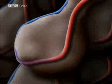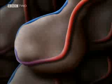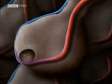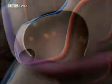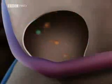Each alveolus is surrounded by a network of minute blood vessels. Those individual blood vessels are very much less than a hair's breadth in diameter. As blood seeps and permeates through the blood vessels, it's in very intimate contact with the air within the alveolus.